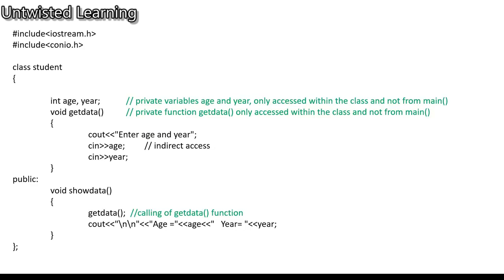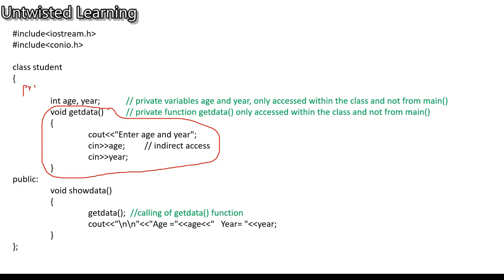In this next program, one change is made — the get data function is declared and defined inside the private section. The private keyword is not written since by default it is private without needing to write it. So these are the private variables and private function — void get_data.